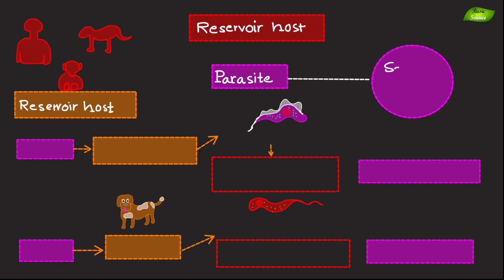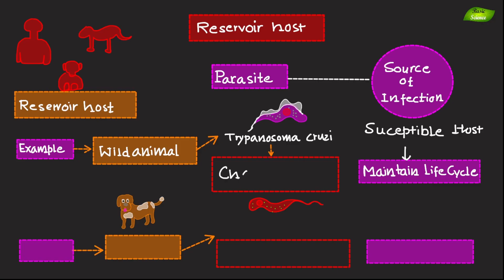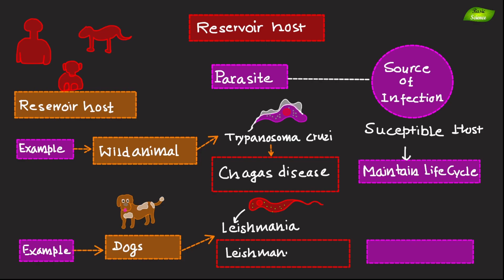Reservoir hosts harbor the parasite and act as a source of infection for other susceptible hosts, maintaining the parasite's life cycle in the environment. For example, various wild mammals act as reservoir hosts for Trypanosoma cruzi, the causative agent of Chagas' disease, ensuring its persistence in nature. Another example is dogs for Leishmania species — dogs are significant reservoir hosts for Leishmania species, which can cause Leishmaniasis, maintaining the parasite in endemic areas.